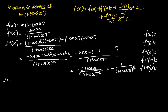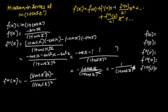Next, to find f'''(x), we again use the quotient rule. We have (1 + cos x)² in the denominator. In the numerator, differentiating the constant negative 1 gives 0, subtracting away the derivative of (1 + cos x), which is negative sin x. So f'''(x) equals negative sin x over (1 + cos x)².